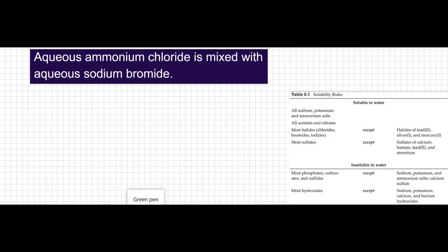Ammonium is NH4+ and chloride is Cl-, and sodium is Na+ and bromide is Br-. So ammonium chloride is just going to be NH4Cl and that's aqueous, and the sodium bromide is NaBr and that's also aqueous.